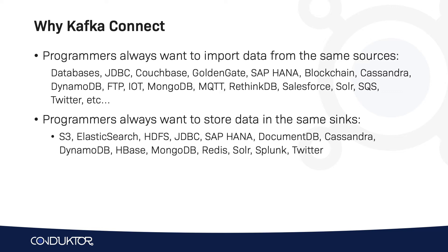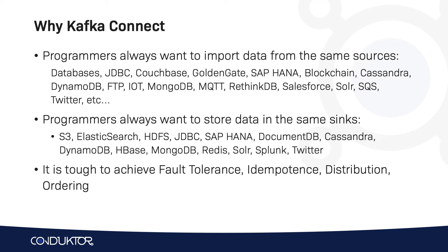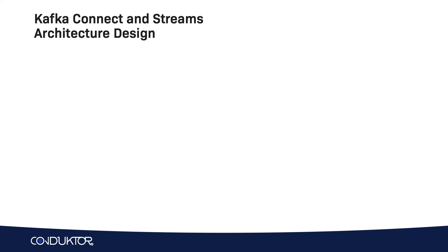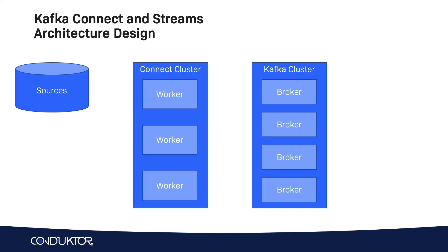Writing code for this is quite difficult. On top of it, if you need to think about fault tolerance, idempotence, distribution and ordering, it becomes very, very complicated to write a good program. A programmer who is an expert at some of these technologies may already have done a very good job writing a Kafka Connect connector. So the idea is that we'll have our Kafka cluster, some sources, and we'll create a Kafka Connect cluster — a separate cluster from your Kafka cluster — with workers running on them. In this course, we're going to launch a Kafka Connect cluster of just one worker.